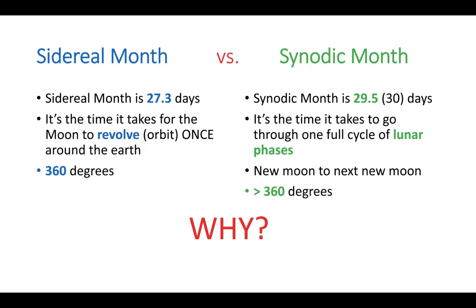So why are these different? The synodic month means that the moon has to go a little more than 360 degrees. If it only takes 27.3 days to go 360 degrees, it's going to take a little more than that — 29.5 days. So why this difference of approximately two days between the time it takes for the moon to orbit once around the earth and the time it takes to go through its full cycle of lunar phases? Let's look at a diagram to understand why.